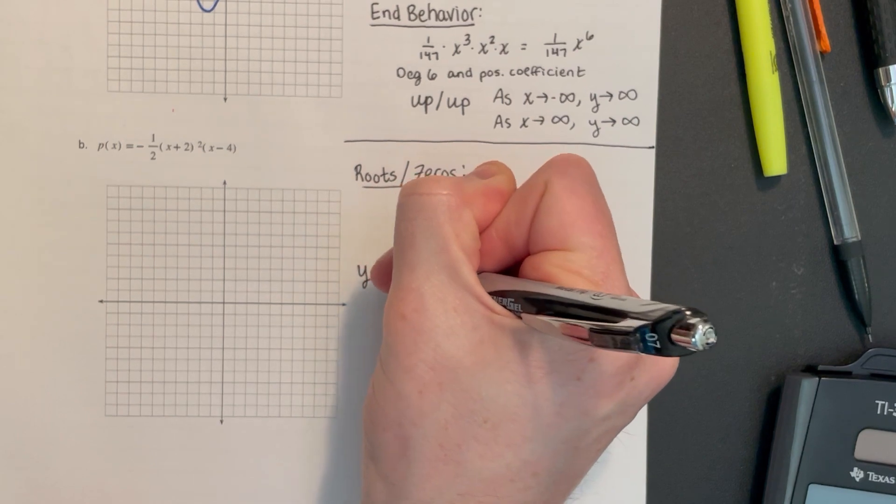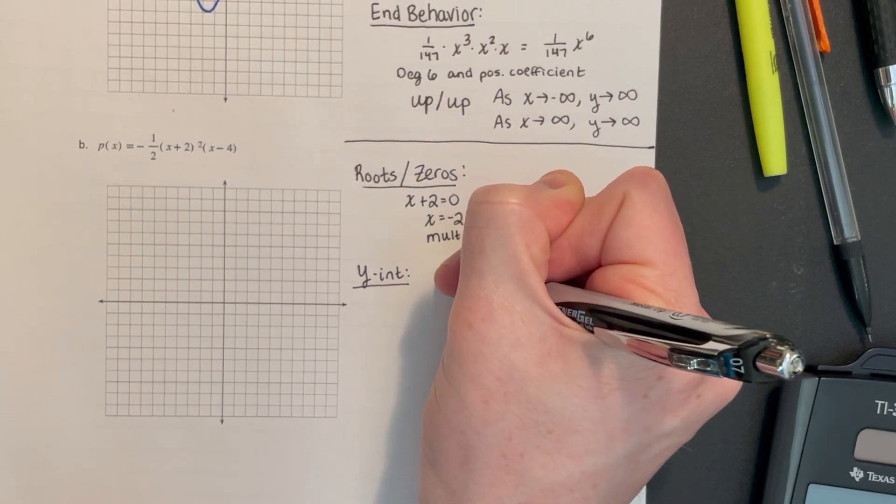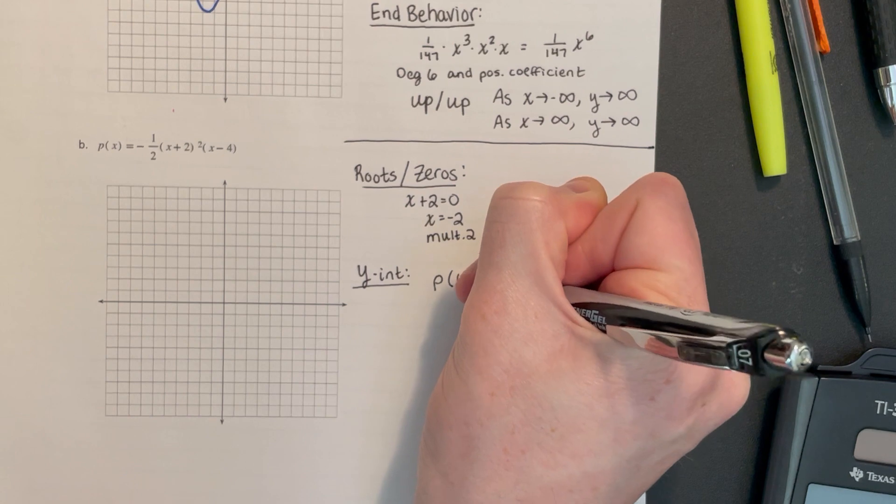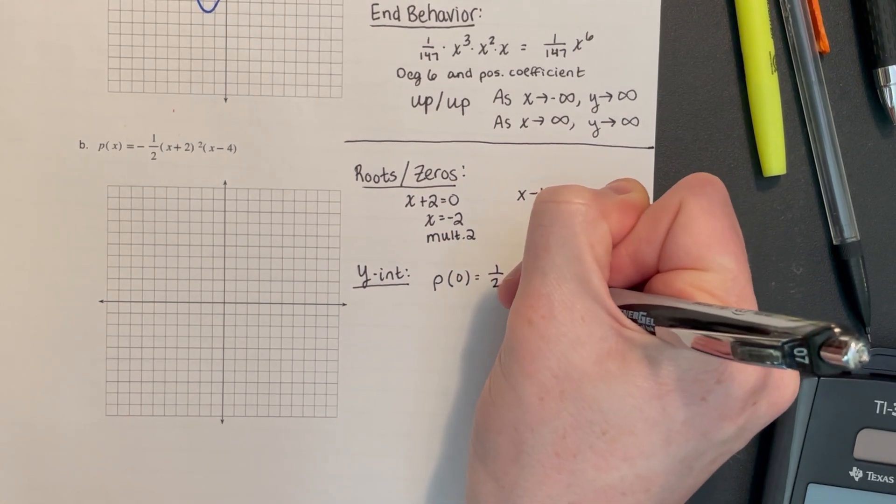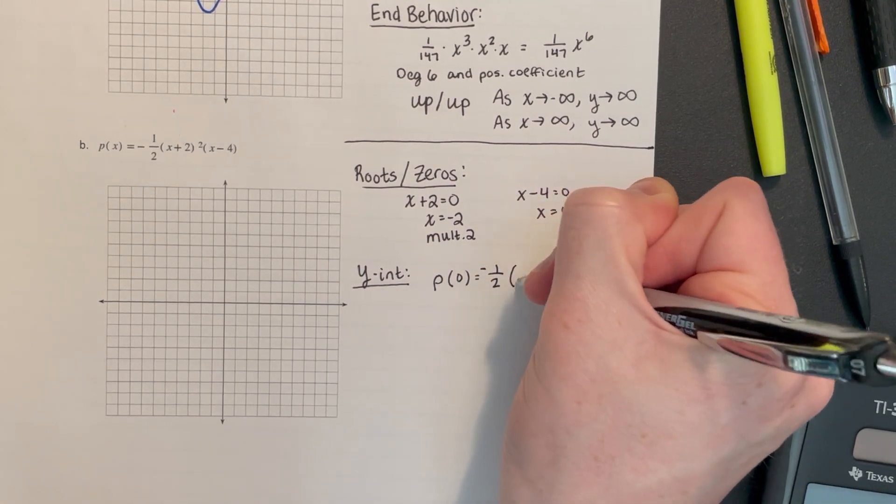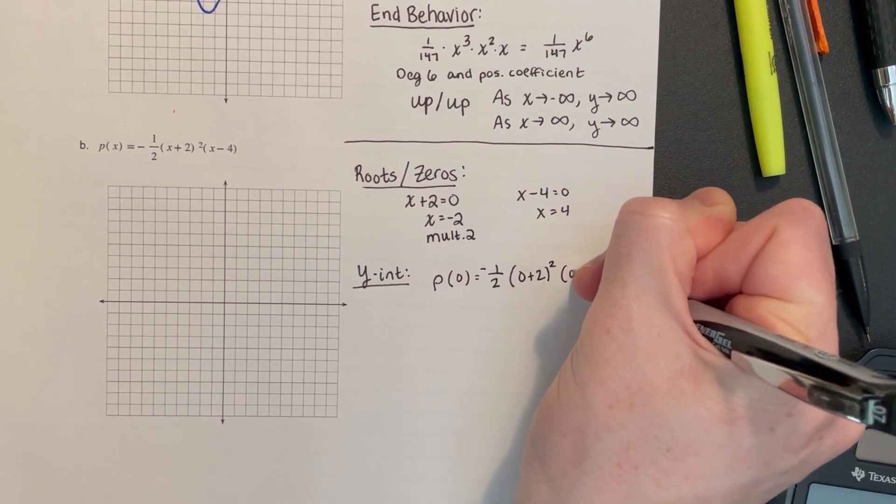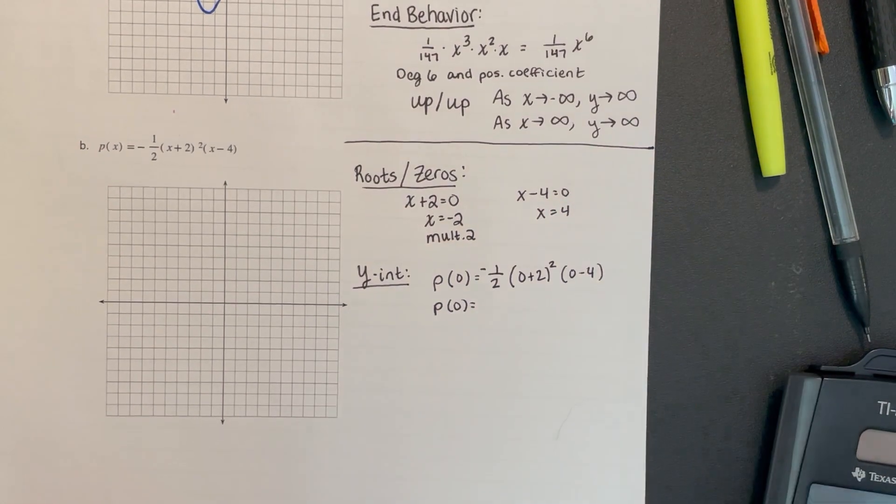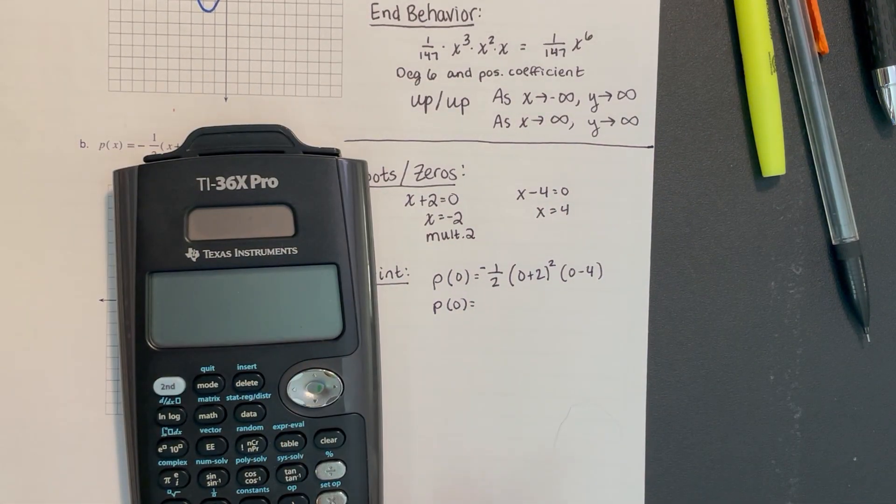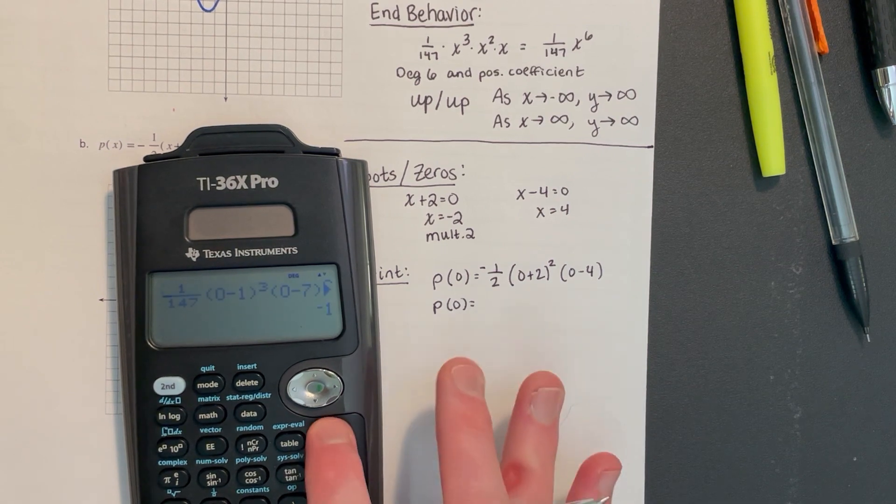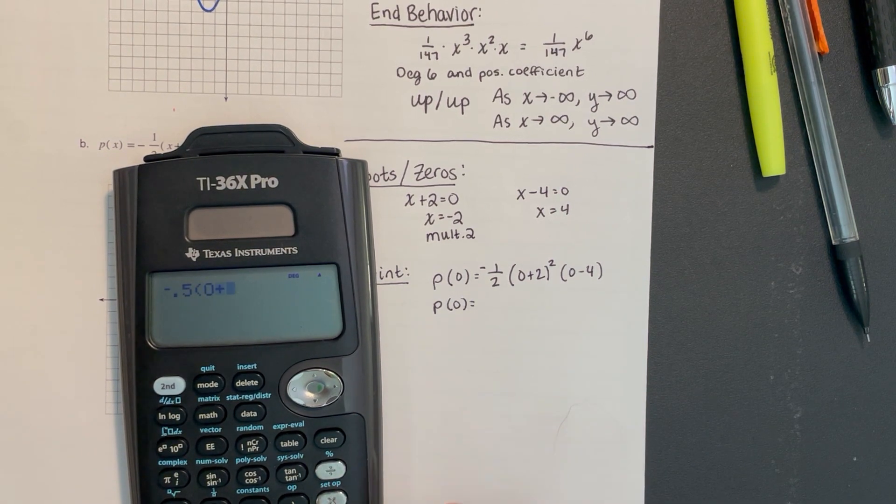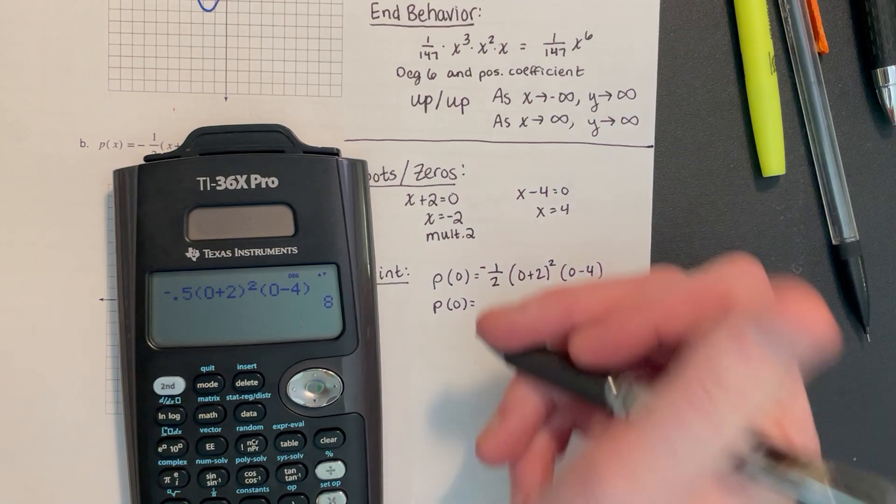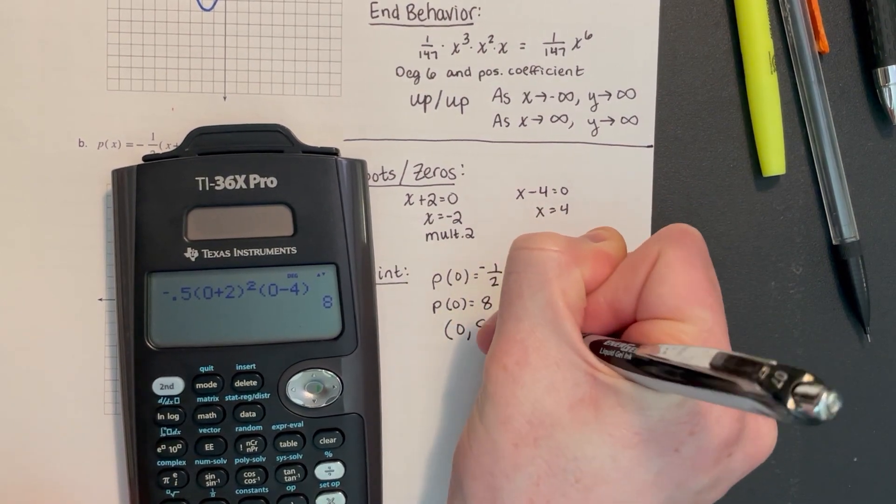Our y-intercept, if I find f of 0, in this case p of 0, I'd have -1/2 times (0+2)² times (0-4). We can still do that in our head if we want to, but we don't have to. We've got -1/2, then (0+2)², and (0-4). Our y-intercept is 8, so we have a point at (0, 8).